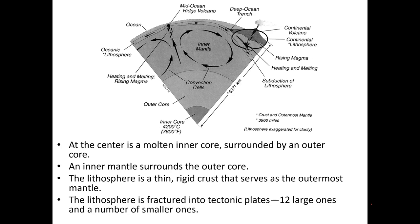At the center of the earth is a molten inner core surrounded by an outer core. An inner mantle surrounds the outer core. Then you have the lithosphere, which is a thin rigid crust that serves as the outermost mantle. The lithosphere itself is fractured into tectonic plates—12 large ones and a number of smaller ones.